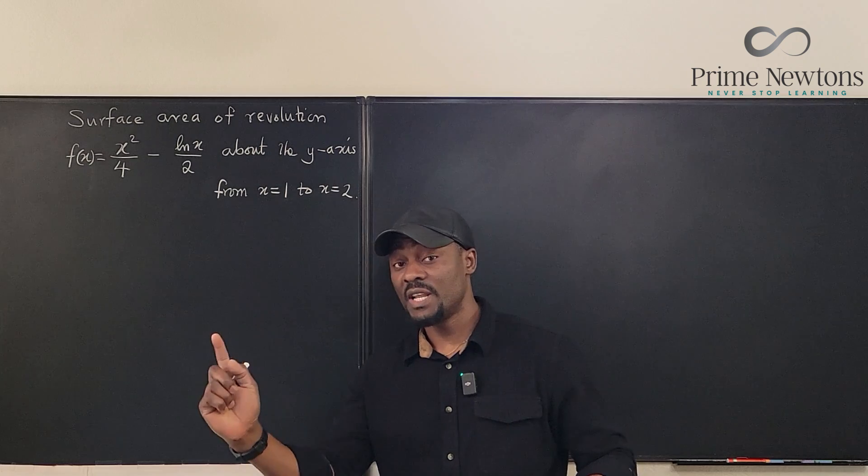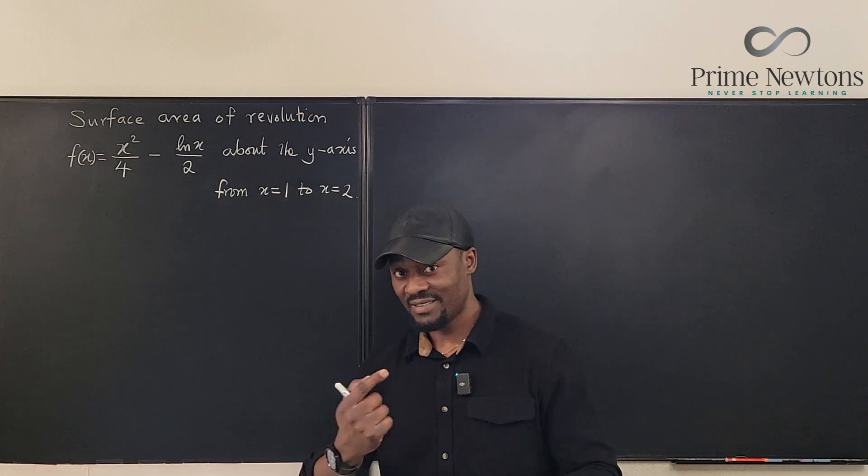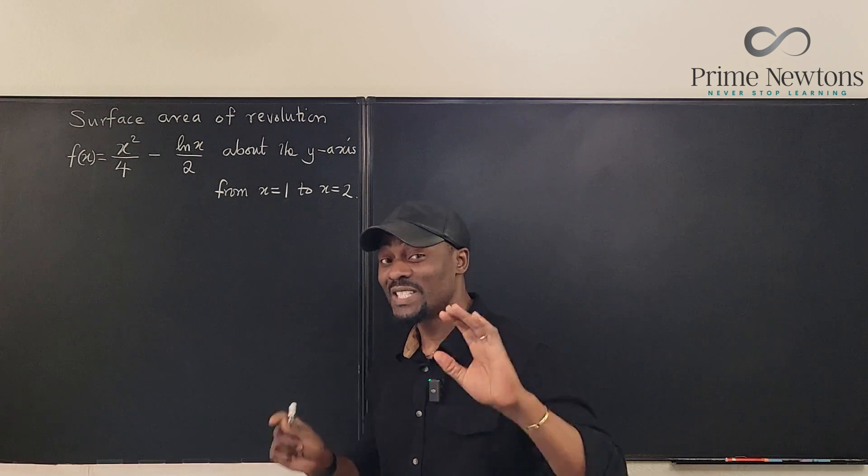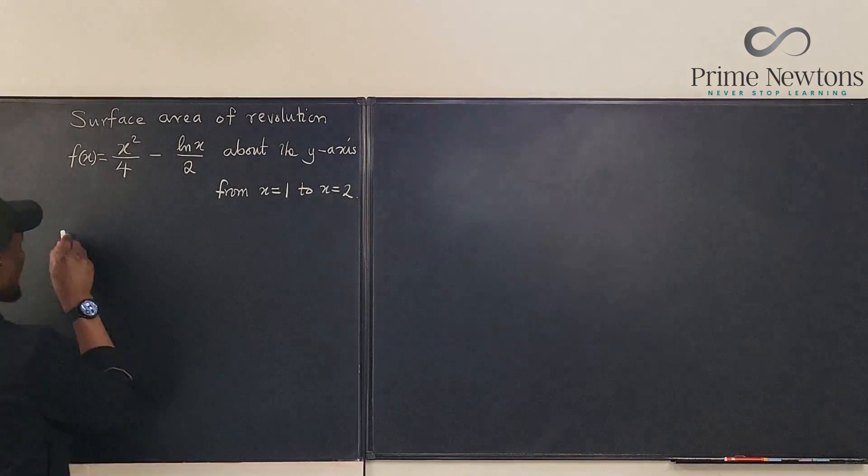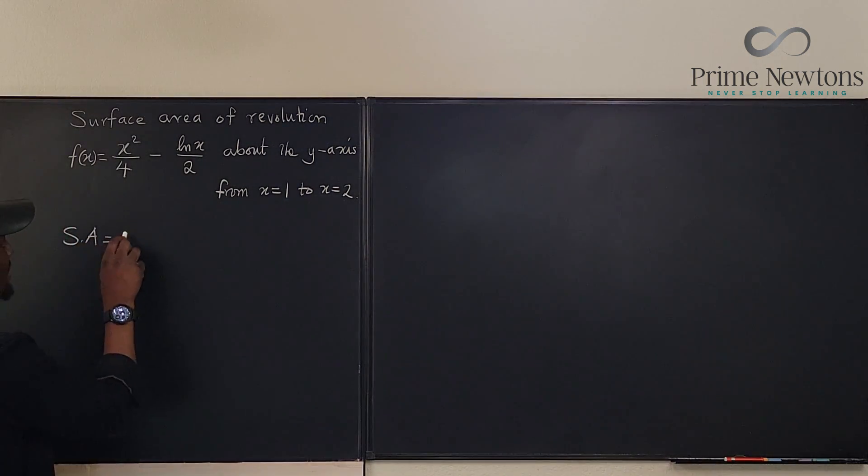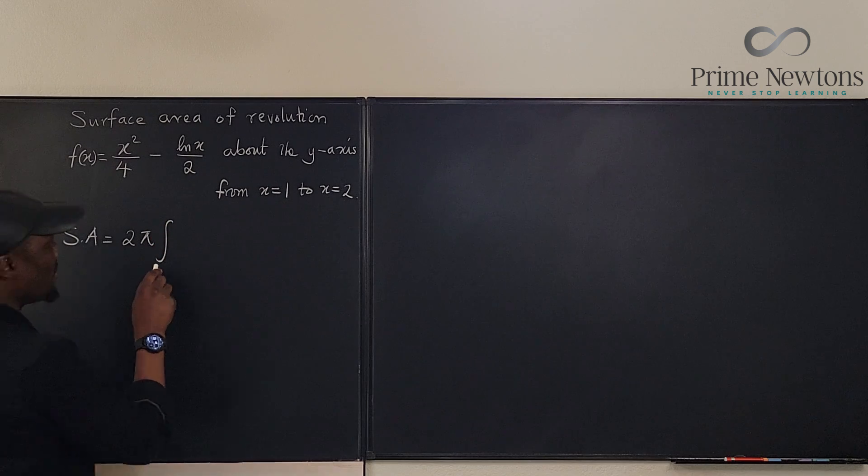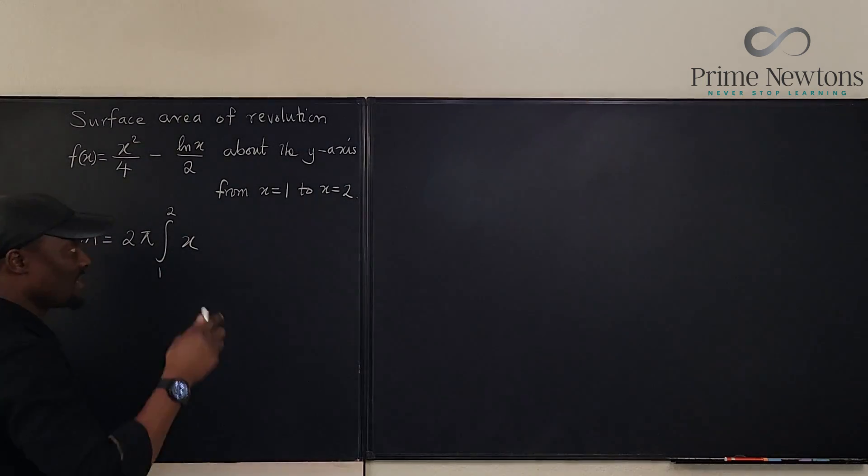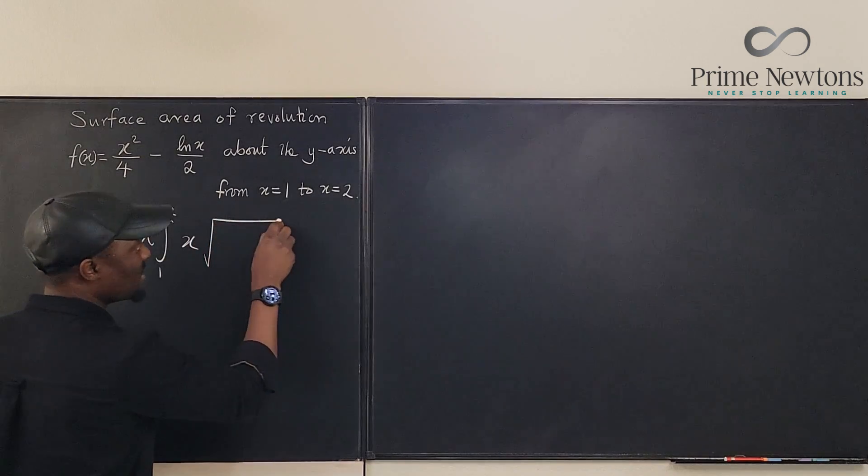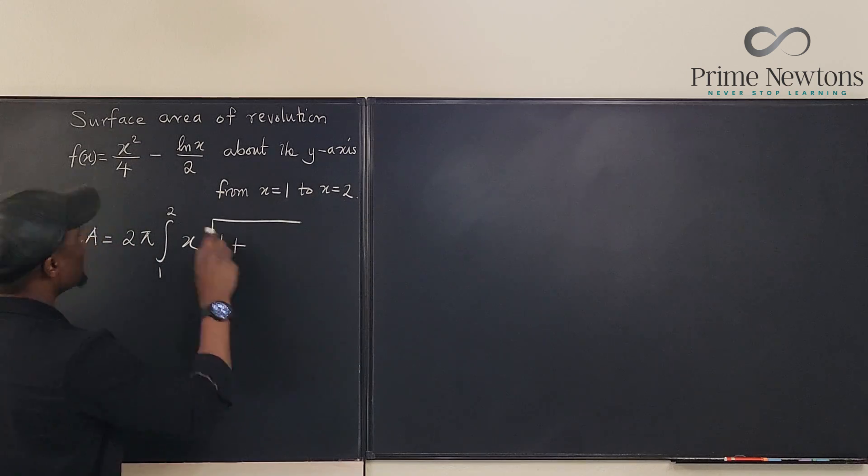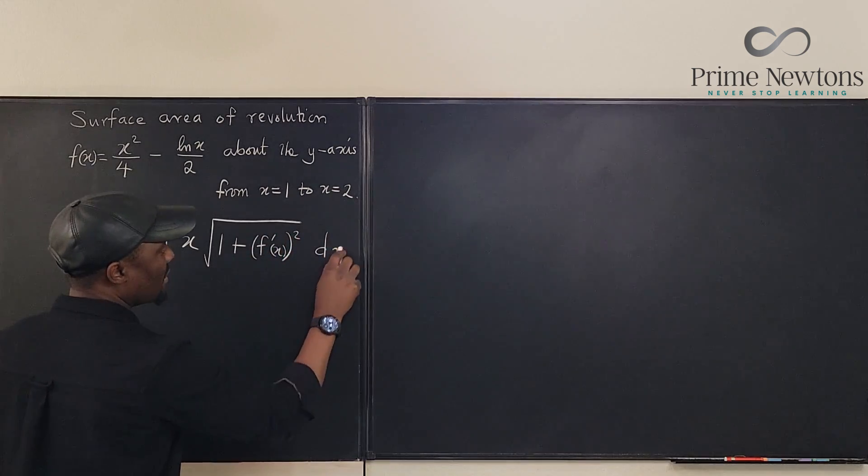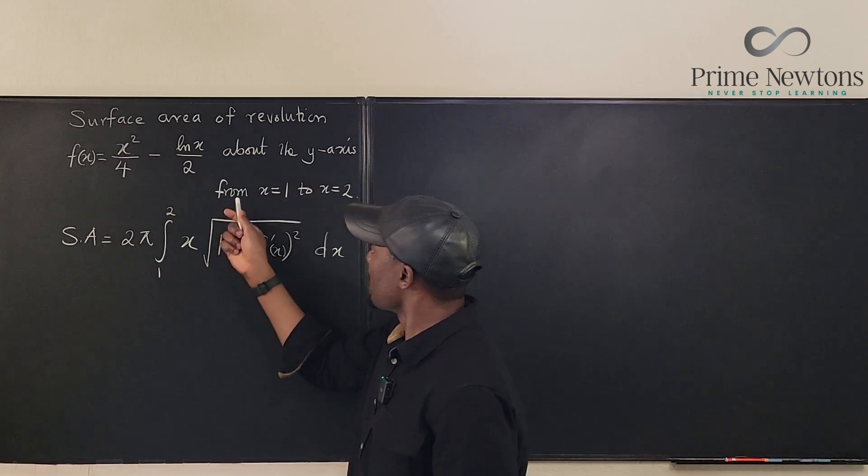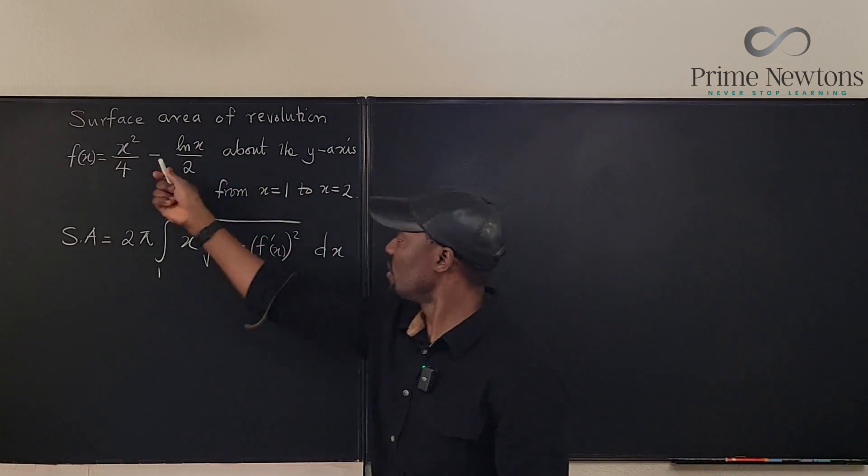So because the rotation is about the y-axis, the radius has to be in terms of x. So we just need to write the formula and put all the correct things where they're supposed to be. So remember, we say that the surface area is given by 2 pi times the integral from the beginning point, which is 1 to 2 of, we have x. So the radius has to be x. That's the hard part. And you have the square root of 1 plus, this is the function. So the derivative will be f prime of x squared dx. It's going to be dx because the function is given in terms of x.